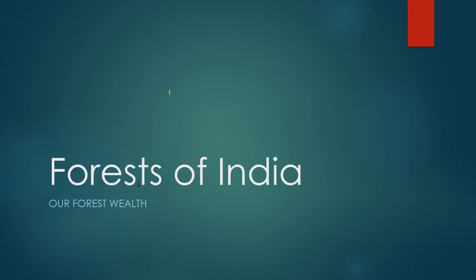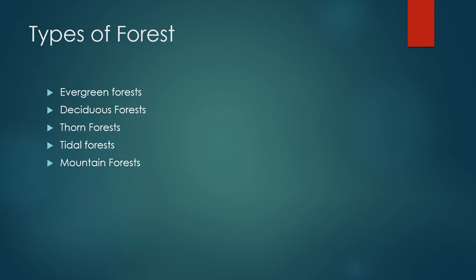I have prepared notes here. Now, from here we shift to the types of forest — our main topic of this chapter. We have five kinds of forest: evergreen forest, deciduous forest, thorn forest, tidal forest, and mountain forest.